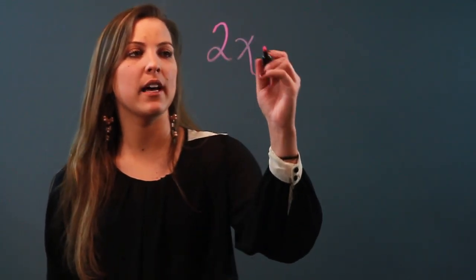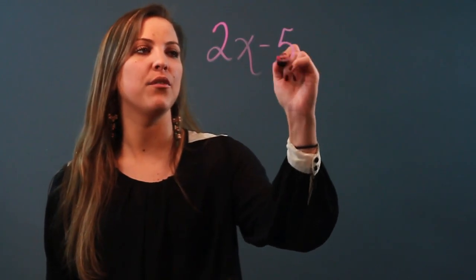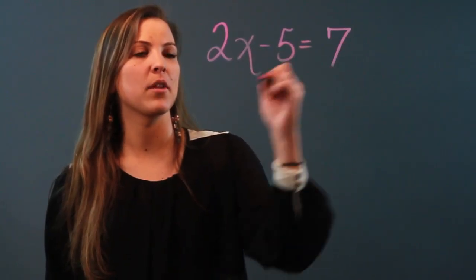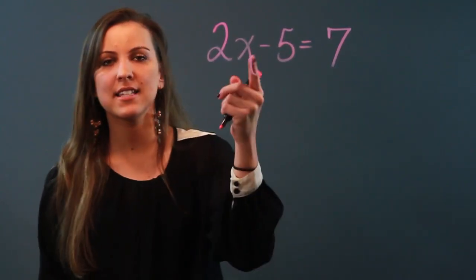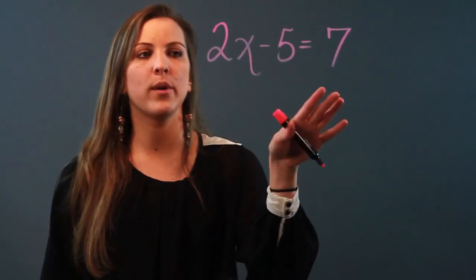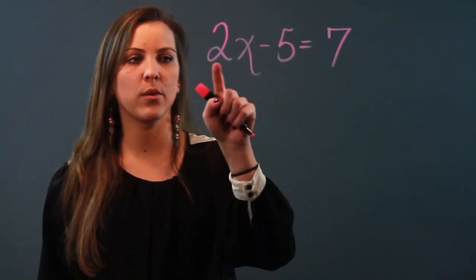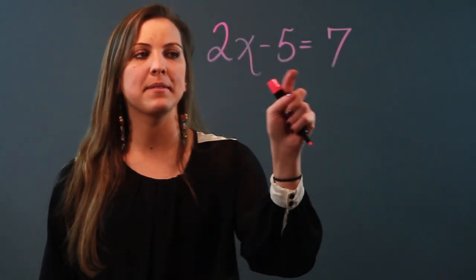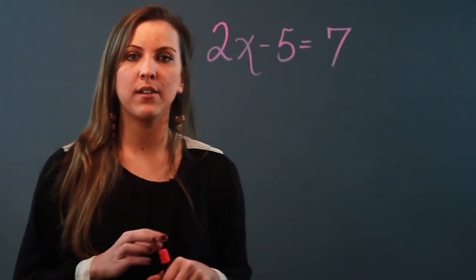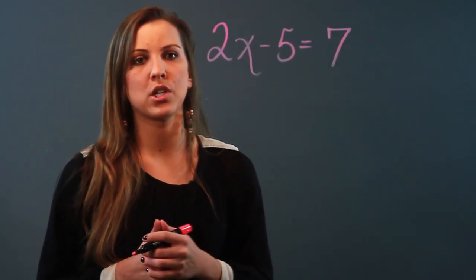So if I've got an equation like 2x minus 5 equals 7, I want to isolate the variable in order to solve this equation. But I notice that I have two operations going on: I have multiplication here and I have subtraction here. And you have to do the inverse operation of addition or subtraction first.